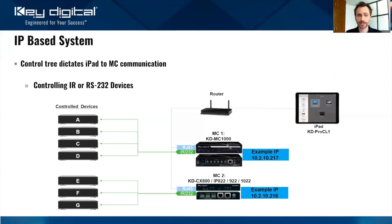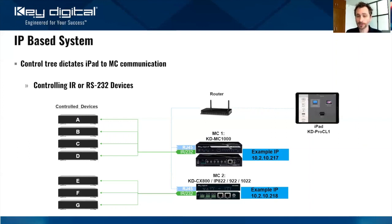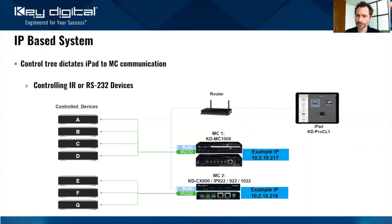You can mix and match controllers within the same system. We have options — one with 3.5mm ports, one with Phoenix connectors. We have a hardware discussion coming up in the course with more details on these different master controller options. In the Compass Navigator software where we do our programming, you build a tree on the left — for example, our MC1000 with its IP address entered. In the properties panel on the right, you can configure each port as RS-232, IR, or voltage sensor/trigger, all done very easily through the Compass Navigator software.